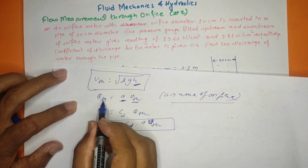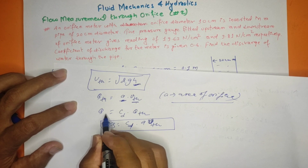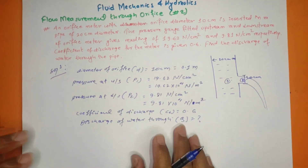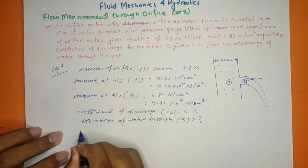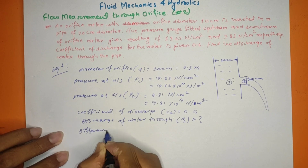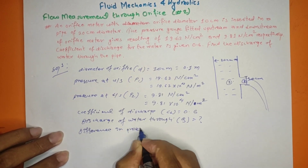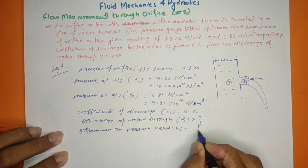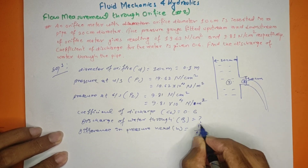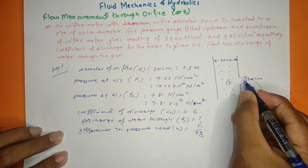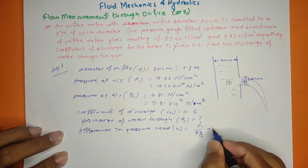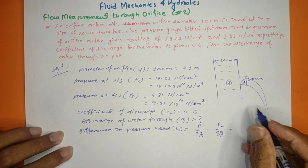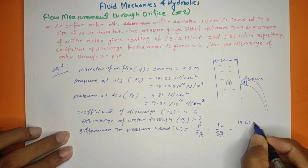We calculate the area, the theoretical velocity, and then the theoretical discharge, and finally the actual discharge. First, we find the value of the pressure head difference: the pressure head is P divided by ρg. The difference is P1/ρg minus P2/ρg.